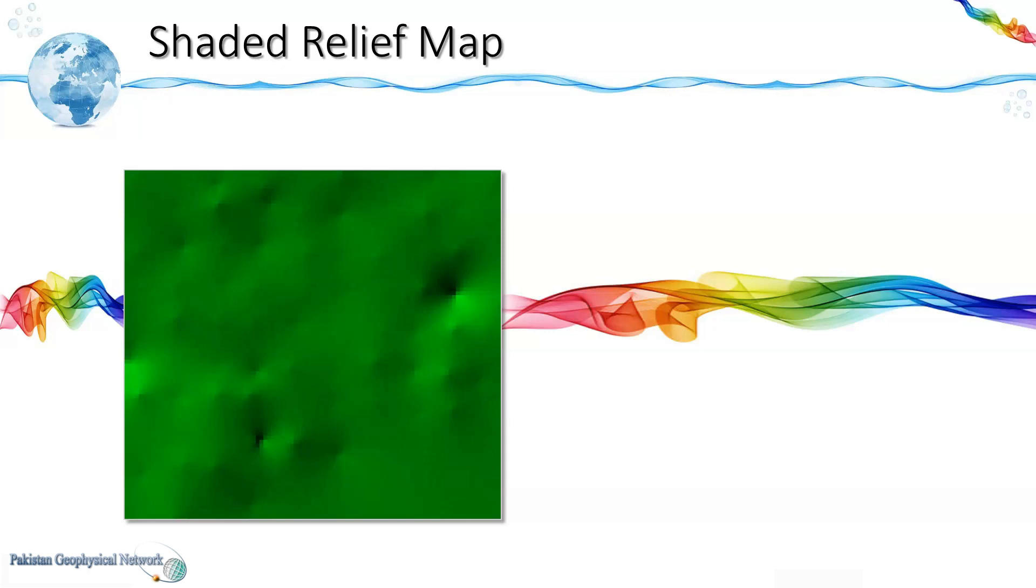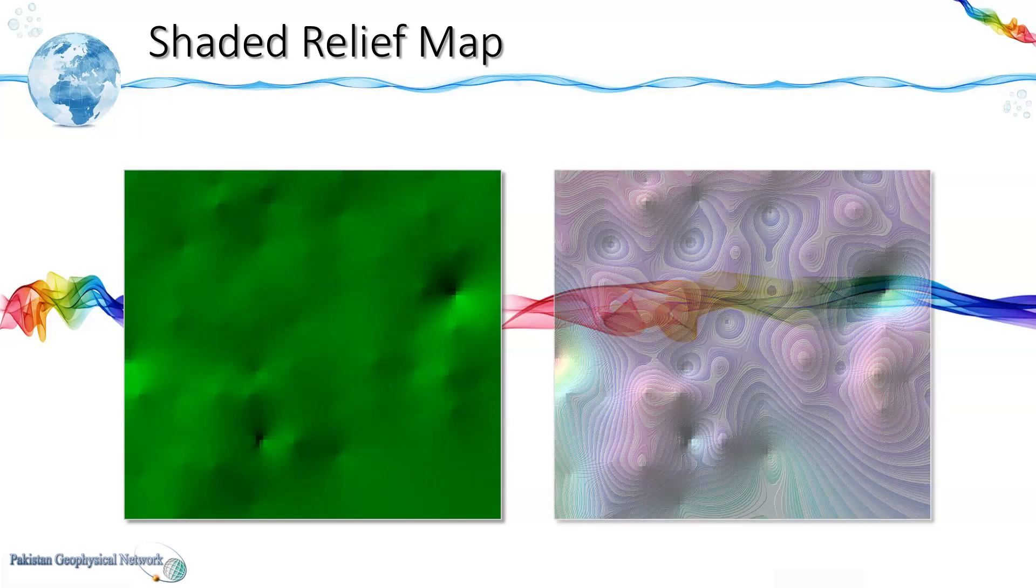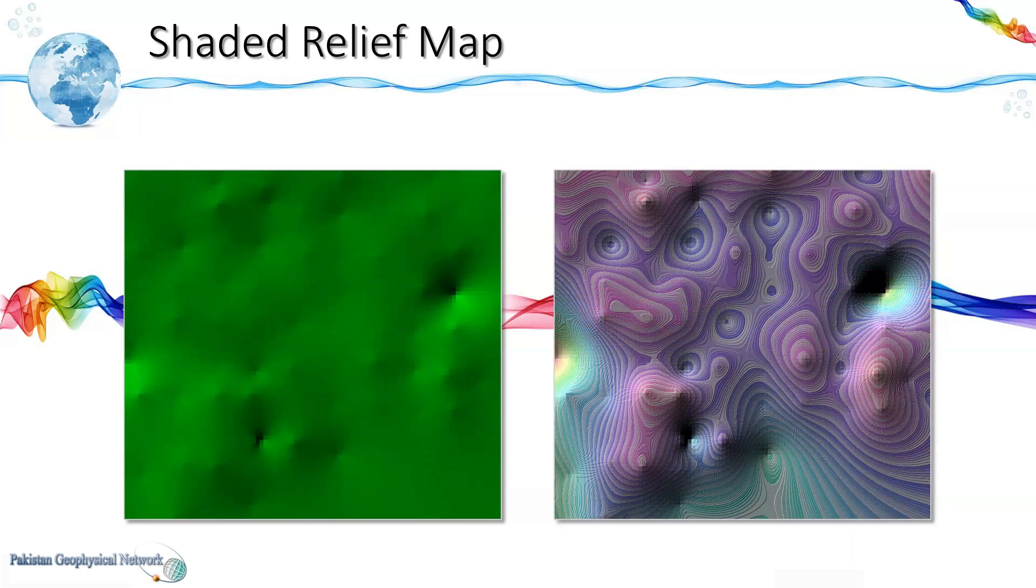We can also generate shaded relief maps using color spectrums such as this one. This gives a more appealing effect and we can see it gives us a depth perception as the topographic features such as elevated parts and depressions have been highlighted.